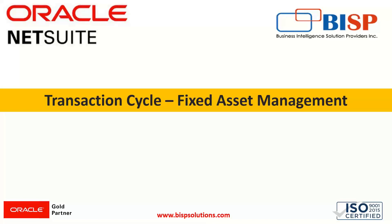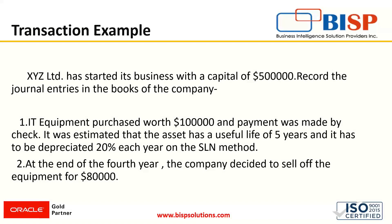Today we will be knowing about the scenario in which fixed asset management actually works. The fixed asset cycle starts with acquisition till its disposal. Here we have taken an example in which XYZ Limited has started its business with a capital of five lakh dollars. We have to record the journal entries for these transactions. First, IT equipment was purchased worth one lakh dollars and its payment was made by check. It was estimated that the asset has a useful life of five years and it has to be depreciated 20% each year on the straight-line method of depreciation.